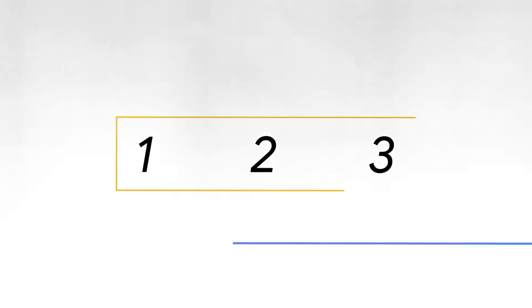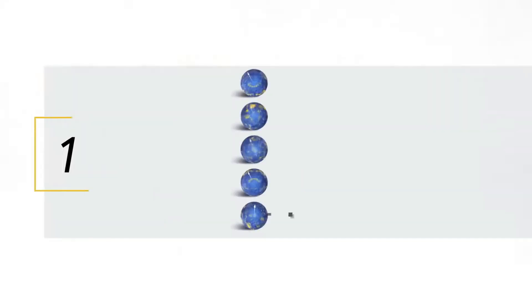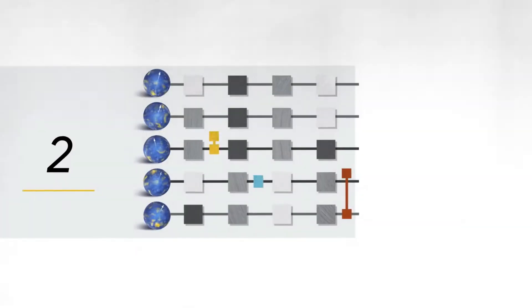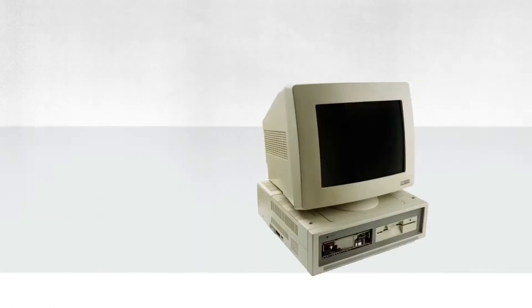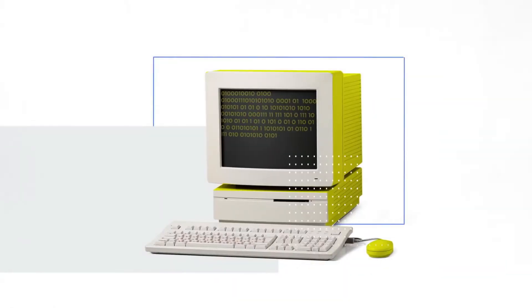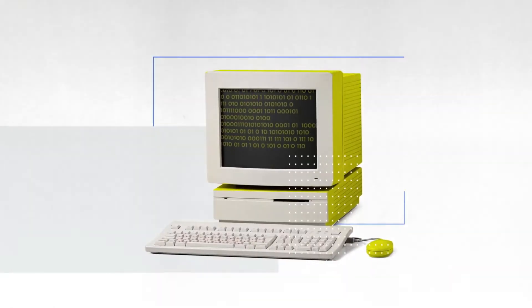To actually demonstrate quantum supremacy we have three steps: First, pick a circuit. Second, run it on the quantum computer. Third, simulate what the quantum computer is doing on a classical computer.